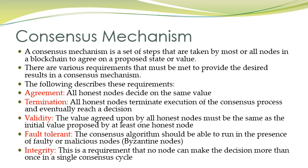The second requirement is termination: all honest nodes terminate execution of the consensus process and eventually reach a decision. When they reach a final decision, the transaction is validated, a block is created, and the block is added to the blockchain. The third requirement is validity: the value agreed upon by all honest nodes must be the same as the initial value proposed by at least one honest node.